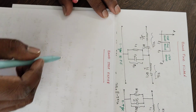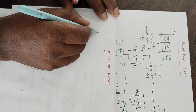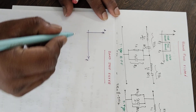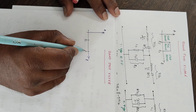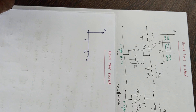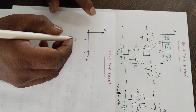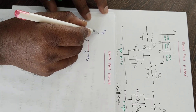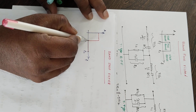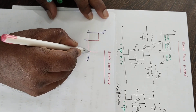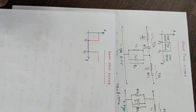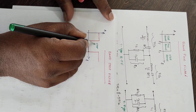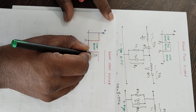Let me draw the frequency response. The vertical axis is signal strength and the horizontal axis is frequency. f1 is the lower cutoff frequency and f2 is the upper cutoff frequency. The filter stops this band of frequencies between f1 and f2, and allows frequencies below f1 and above f2. So the region between f1 and f2 is the stop band, while the regions outside are the pass bands.